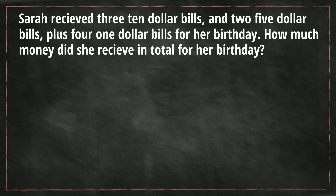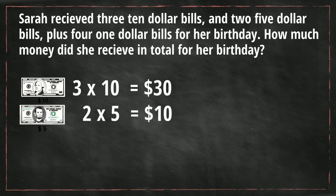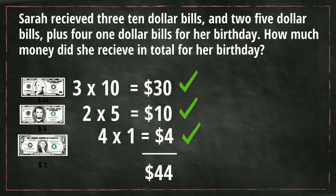Let's start with the ten dollar bills. Each ten dollar bill represents ten one dollar bills, so it's three times ten which equals thirty. Then she received two five dollar bills, so it's two times five which is ten. And then she received four one dollar bills, which is four. So if we total this: thirty plus ten plus four equals forty four dollars. She received forty four dollars for her birthday.